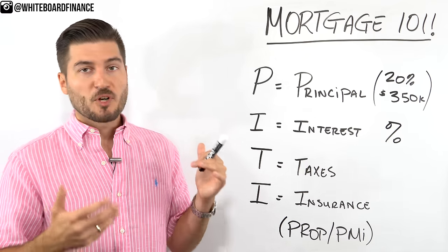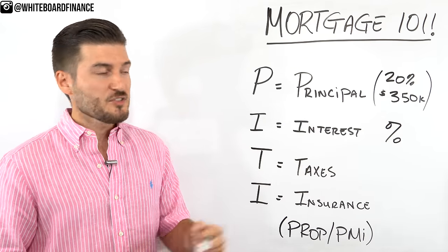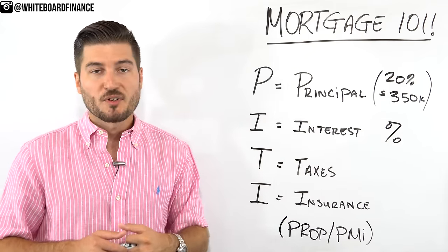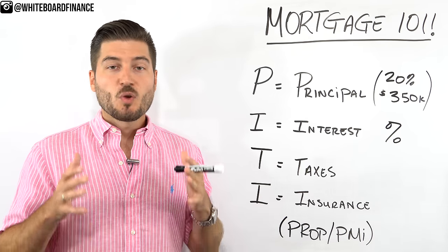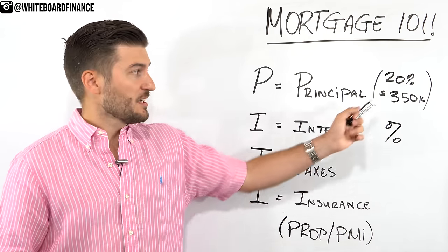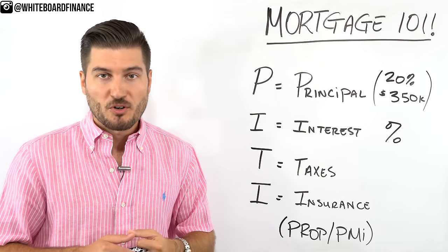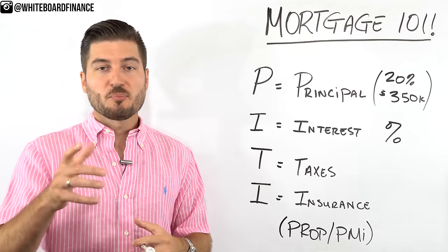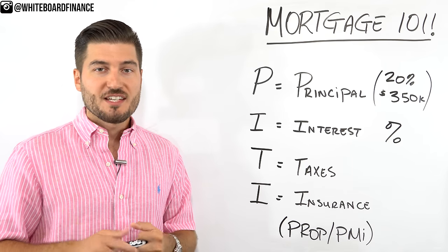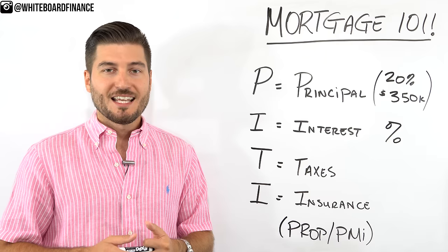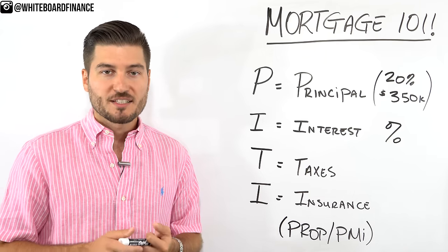The example we're going to use for this video is a $350,000 house, and we're going to be putting 20% down. So in the comments below, tell me what the down payment amount is and what the mortgage amount is going to be. If you answered $70,000 for the down payment and $280,000 on the mortgage, that is the correct answer.